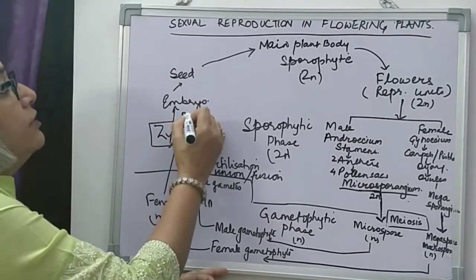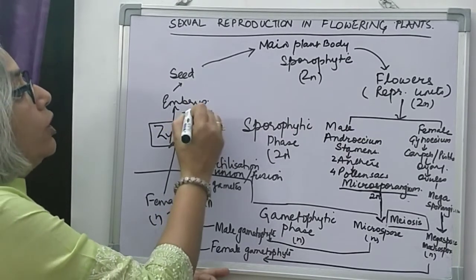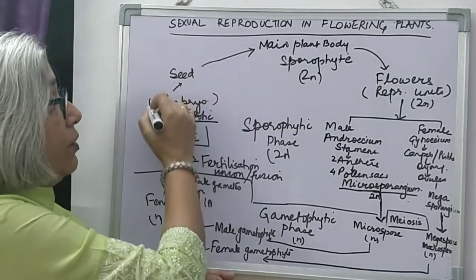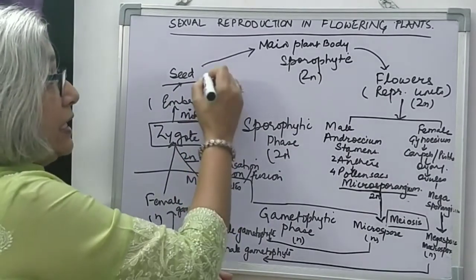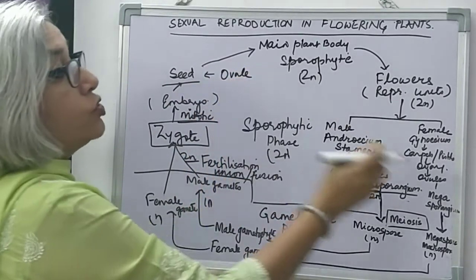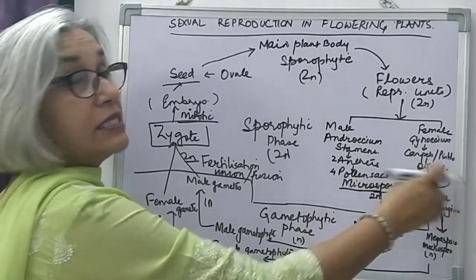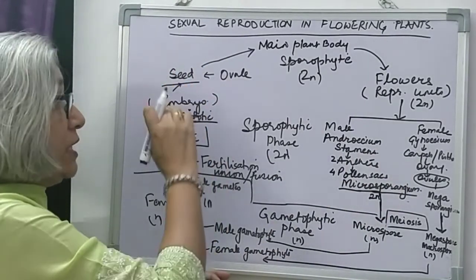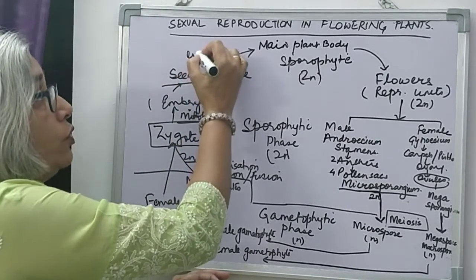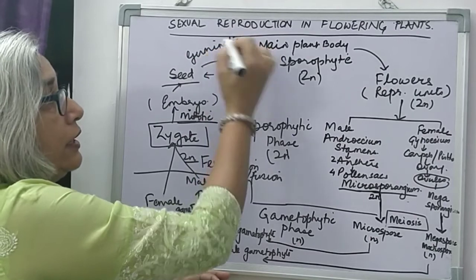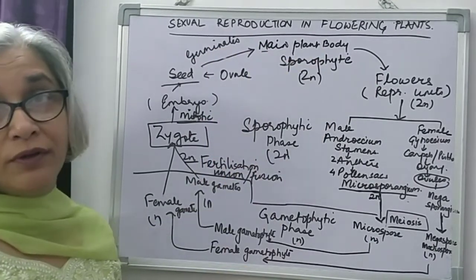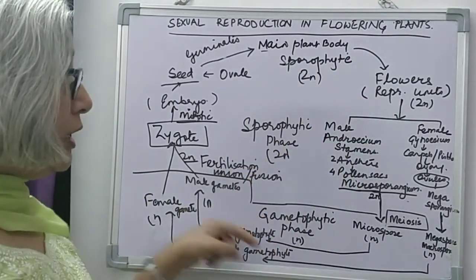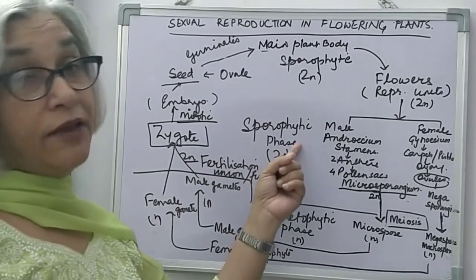The zygote undergoes several divisions, all mitotic in nature, where the chromosome number remains the same. This embryo is contained inside the seed. The seed is actually a mature ovule, so all these changes take place inside the ovule. After fertilization, the ovule is called the seed, which contains the embryo. Once the seed is sown, it germinates, and the main plant body is formed. The plant becomes sexually mature and produces reproductive units. So this is alternation of generations in the life cycle of an angiosperm.